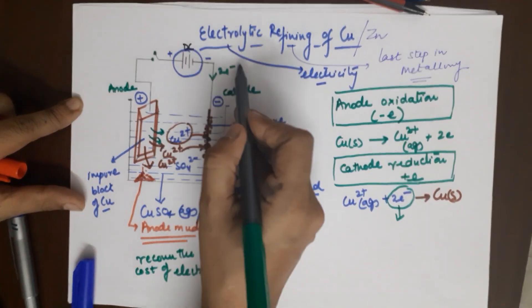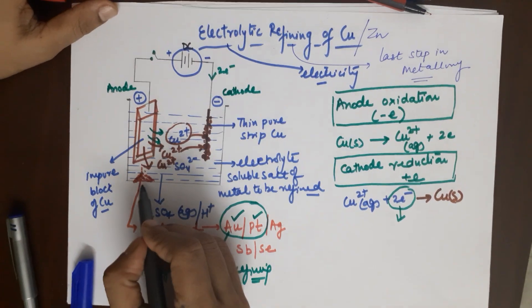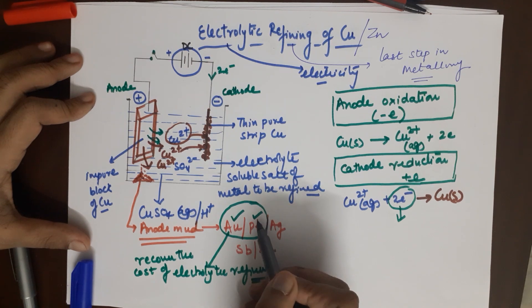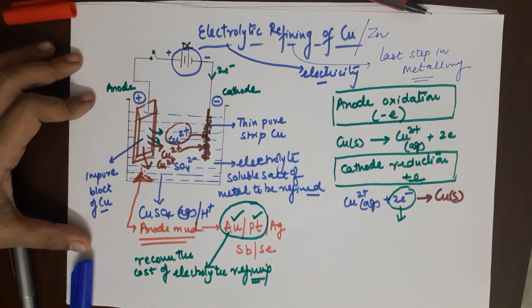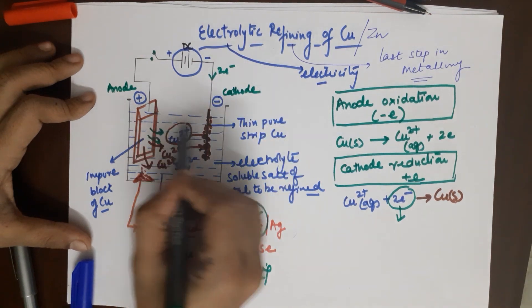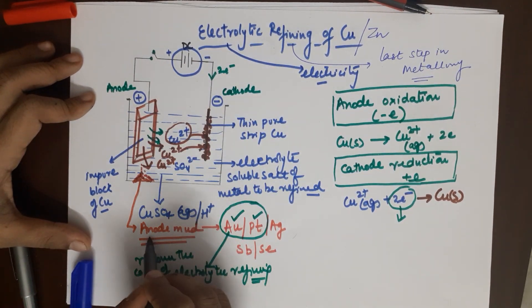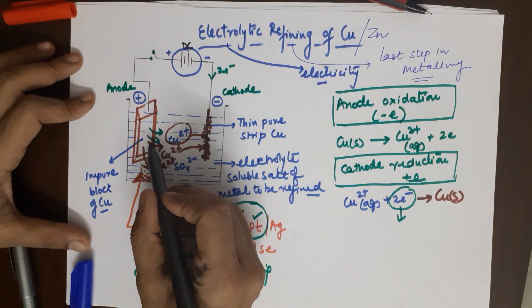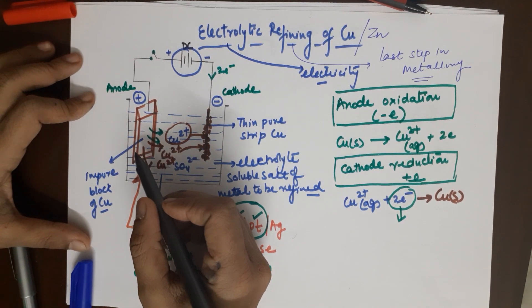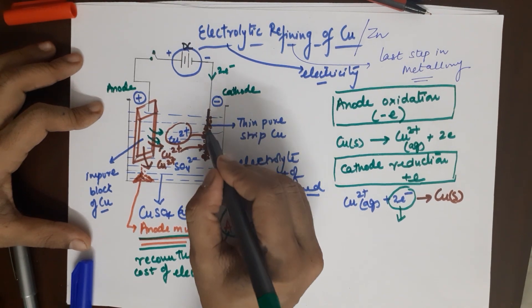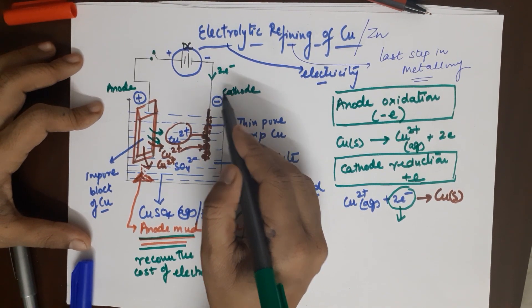Any process which requires electricity is costly, and to cover up the cost this anode mud is of help because it gives you precious metals which have high cost. By selling these metals you can recover the cost of refining. What you should know is what is electrolytic refining of copper, it involves electric current, what is the construction. Always remember the word anode mud. If you remember anode mud you would always remember that the impure block is the anode. This would start decreasing in size while this would start increasing in size and you would get a thick block of pure copper on the cathode side. The same process can also be used for zinc.